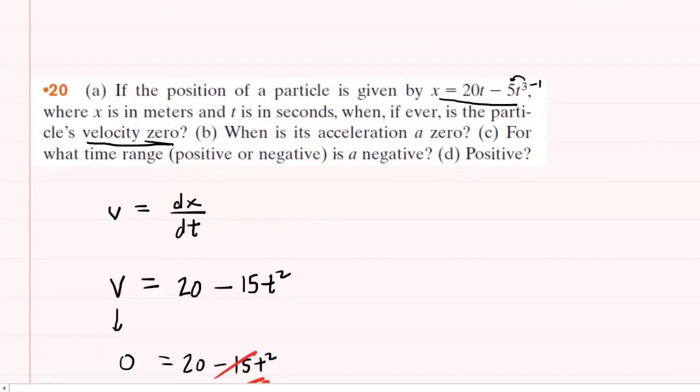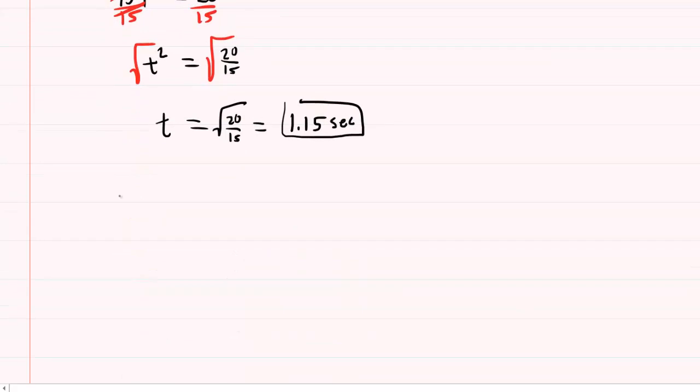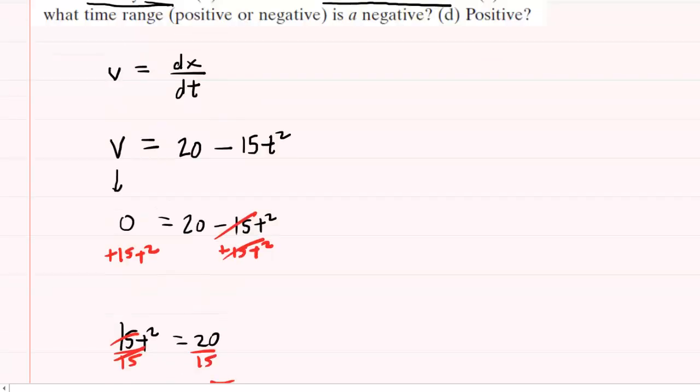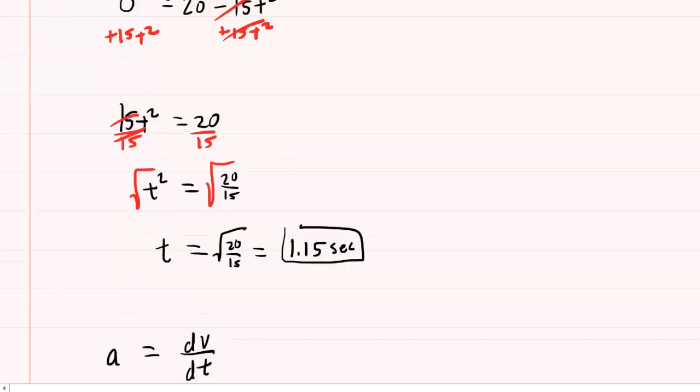In part B we are asked for a time at which the acceleration is zero. This is a similar procedure, except the acceleration is the derivative of the velocity function with respect to time. And let's recall that our velocity function was 20 minus 15t squared.